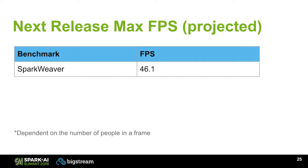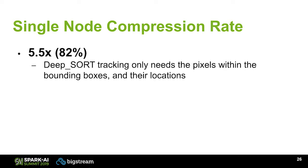We have an upcoming release this year with improved performance. This is what we've been projecting with our internal data sets, and we hope to release more concrete numbers soon. The other metric we wanted to look at is compression — that's one of the main goals of this. On our internal data set, we were getting roughly 82% compression. The reason is that you don't need the whole frame anymore — you really only need what's in the bounding box and the locations of the box, so there's a vast reduction in the amount of data you actually need to send into the cluster.